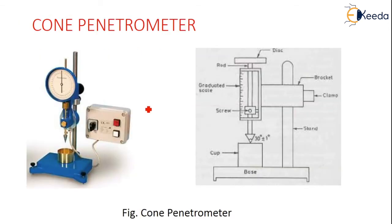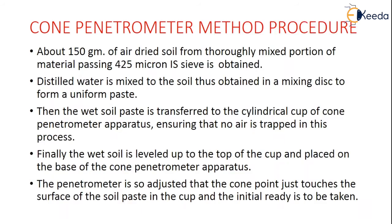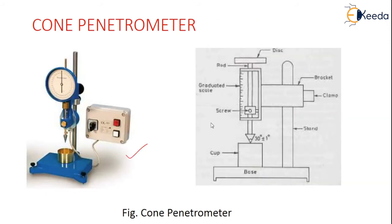The next test is the cone penetration test. About 150 grams of air-dried soil passing through the 425 micron IS sieve is taken. Some distilled water is mixed with the soil to form a very uniform paste. This wet soil paste is transferred to a cylindrical cup of the cone penetration apparatus, ensuring no air is trapped. Finally, the wet soil is leveled up to the top of the cup and placed on the base of the apparatus.